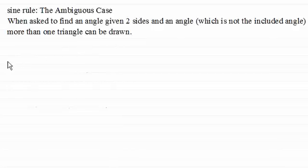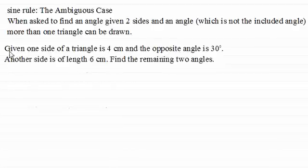I'll show you in this example here. Suppose we're given one side of a triangle is 4 cm and the opposite angle is 30 degrees, and another side is of length 6 cm. Find the remaining two angles.